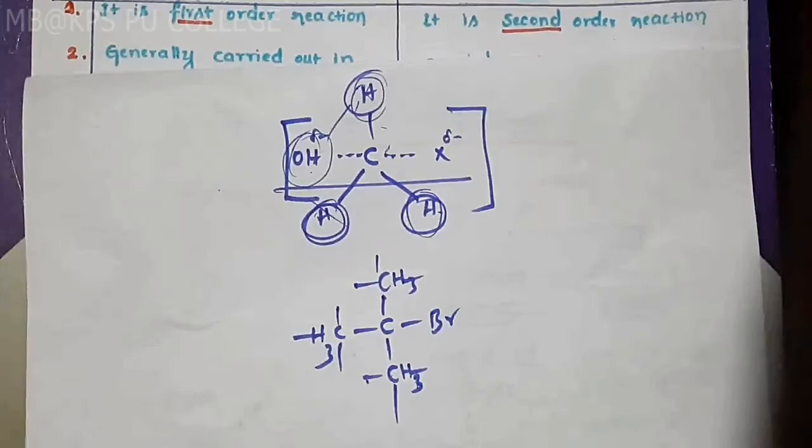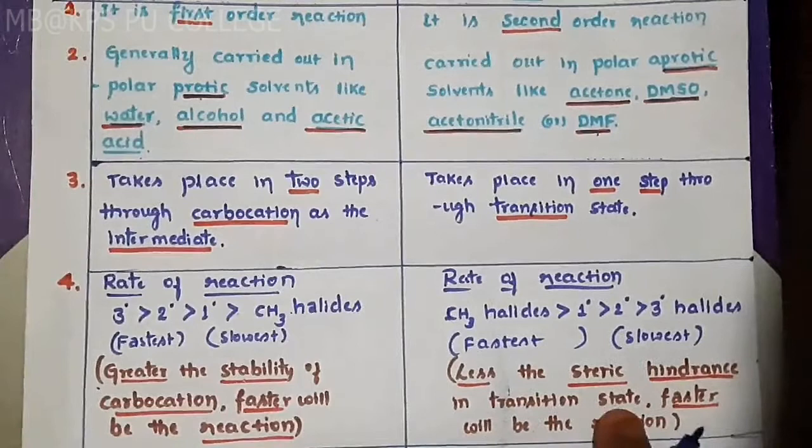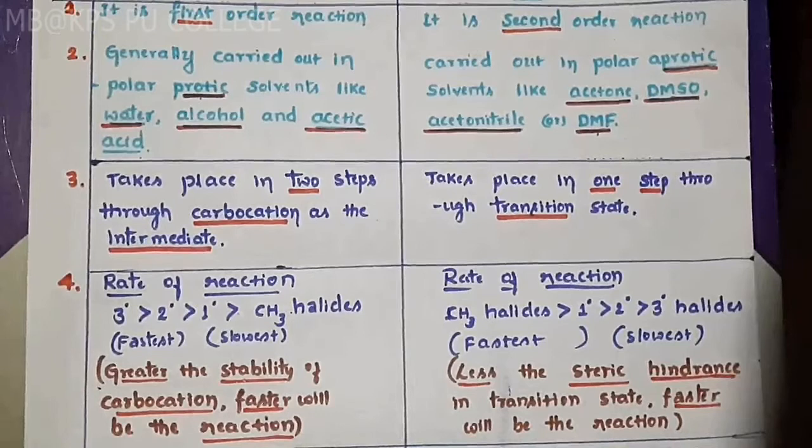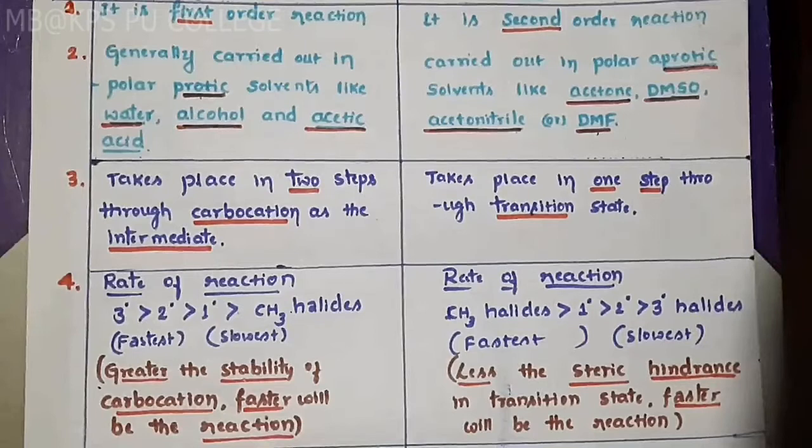That is why the statement is: less the steric hindrance in the transition state, faster will be the reaction. If steric hindrance in the transition state decreases, the reaction speeds up — faster will be the reaction. Can we move on to the fifth point?